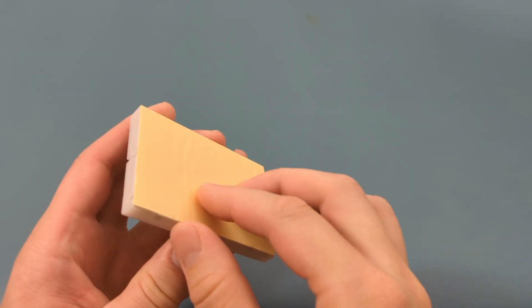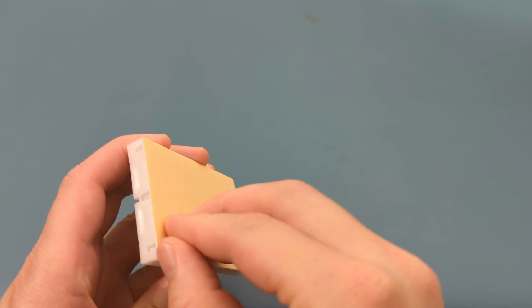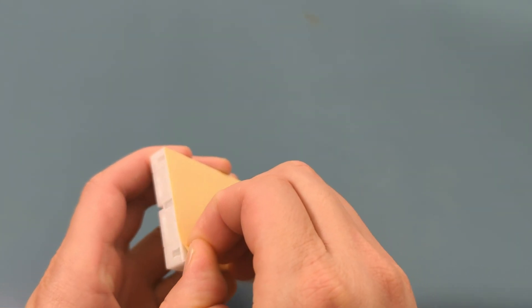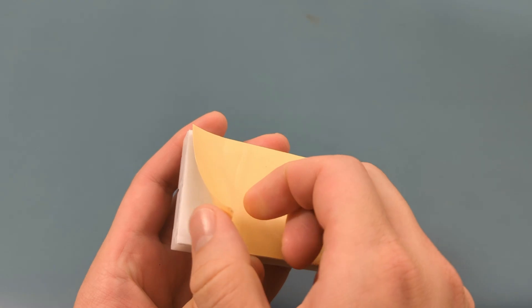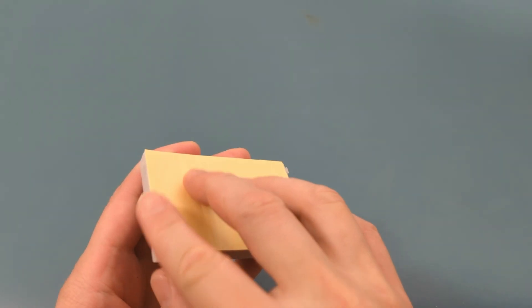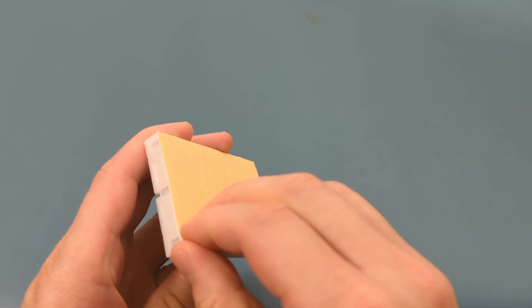On the back of the breadboard is a layer of double-sided tape covered by protective paper. Let's peel off the paper and see what's inside. The first layer is the double-sided tape. You can stick this breadboard permanently to a board or any flat surface. Let's peel off the double-sided tape.